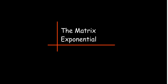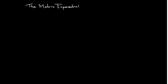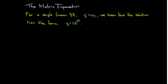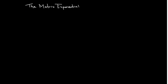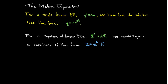In this short video, we're going to talk about the matrix exponential. If you just have a single linear differential equation, say y prime equals ay, we know the solution has the form y equals c times e raised to the power of at. Now, it would be nice if for a system of differential equations — we have X prime equals AX — we would expect a solution of the form x equals e to the power of At times some constant vector. Bear in mind that e raised to the power of At is actually a matrix.